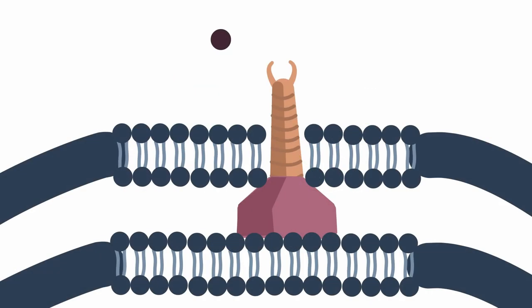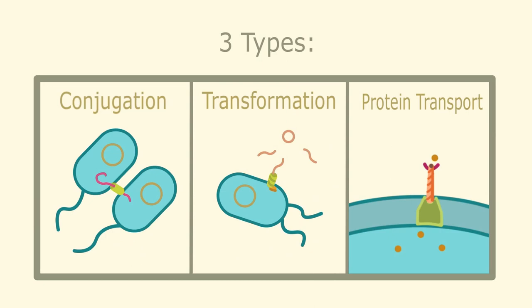This is a quick overview of the structure of the Type 4 secretion system, but we will take a closer look at the structure a little later on in the video. Type 4 secretion system can be divided into three different groups and we will take a closer look at all of them in this video.